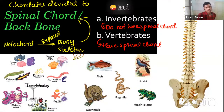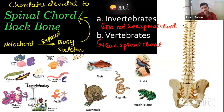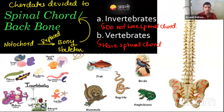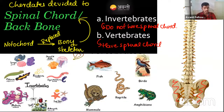Vertebrate examples are fishes, birds, reptiles, mammals, and amphibians. This is the spinal cord of a human — don't worry about the other parts for now. Two questions arise: one is the vertebral column and spinal cord — both are the same.